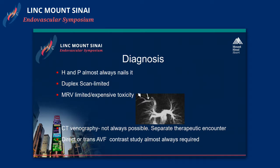Duplex scan, although inexpensive and easy to perform and immediately at hand, has limited utility because the portions of the subclavian vein that you may be interested in are immediately subosteal and not visible. We may see a patent jugular vein, but it is difficult to see the innominate veins. So although there's no problem doing it, it doesn't usually lead to very much information.